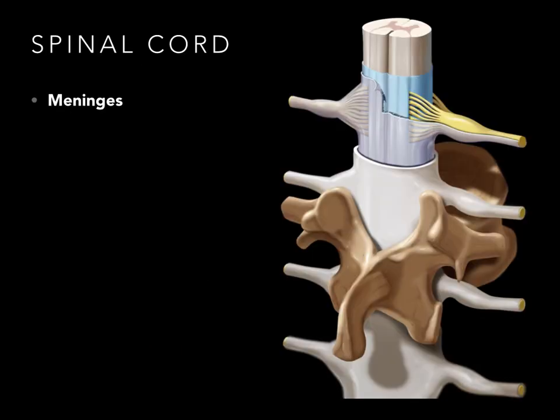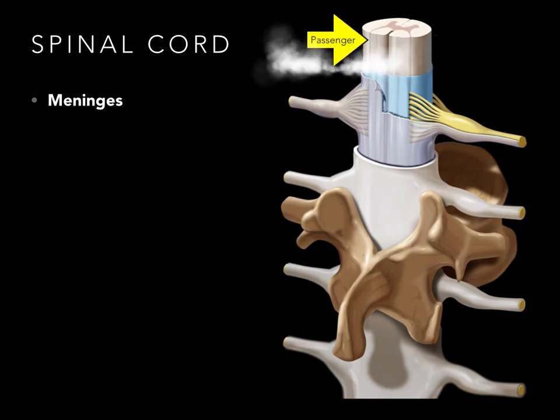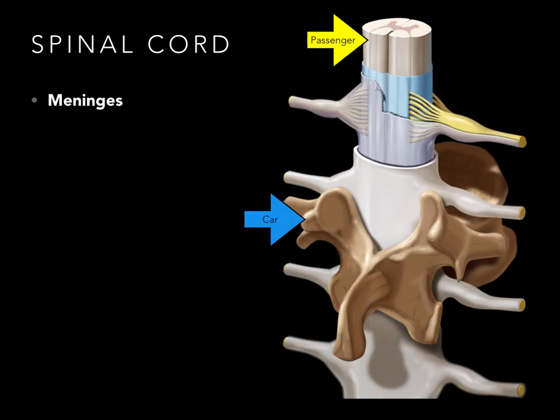Looking at this step dissection of a posterior lateral view of the vertebral column, meninges, and spinal cord, we have the following: there's our passenger, there's the car, and there's the seat belt. The passenger is the spinal cord — this delicate thing that we're trying to protect. That's the whole reason we have all the protection, to make sure that the passenger — in our case the spinal cord — is protected. It has to be in a very homeostatic environment, both physiologically and physically.